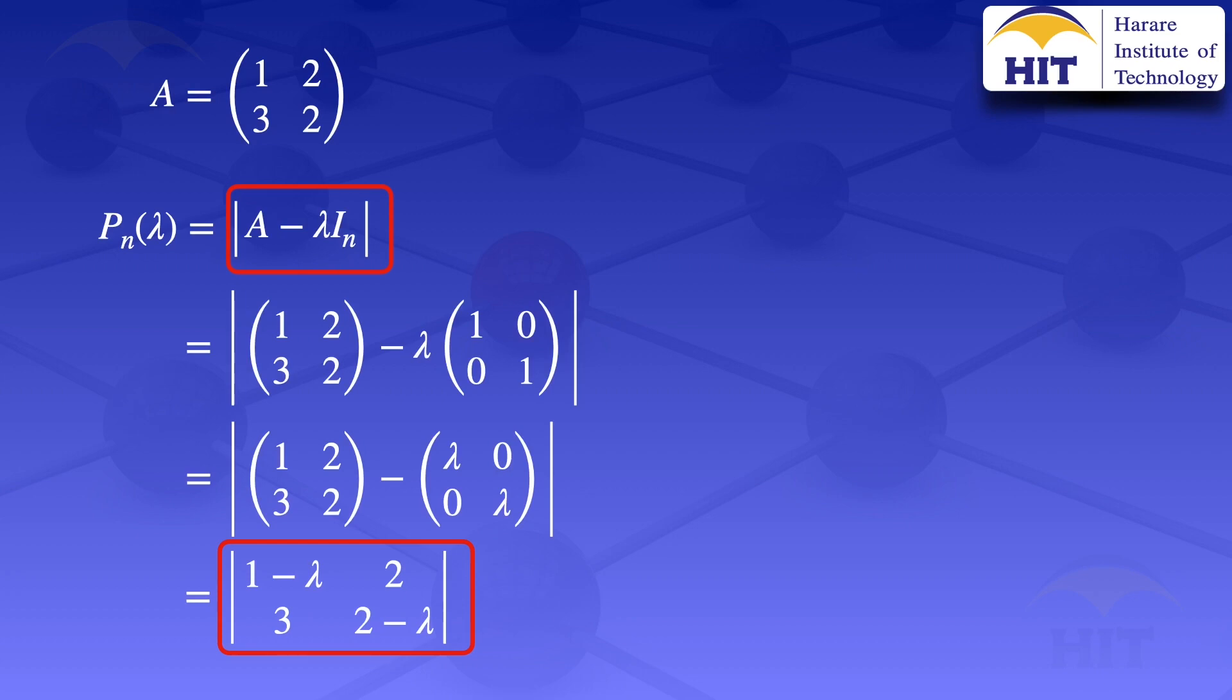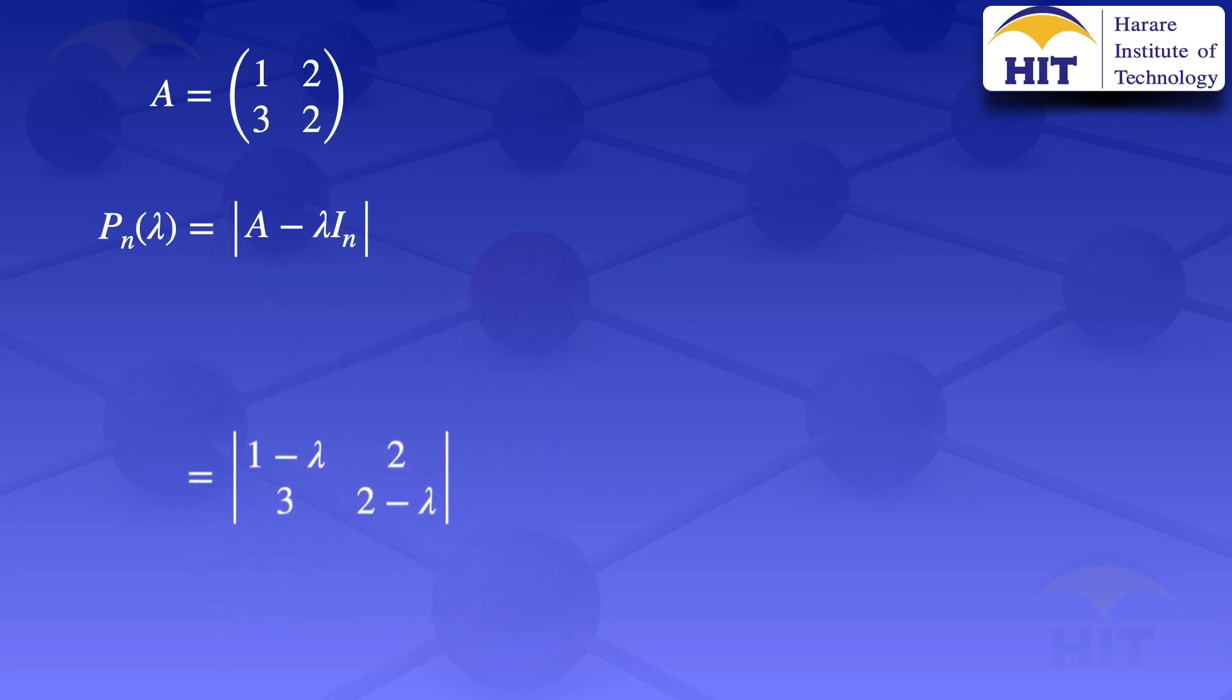So when you are working in the tutorials or the tests or the examination, you can jump from the first step there, which is highlighted, up to the last step that I've highlighted there. The other two steps are not that necessary. I was just illustrating it for the first time so that you would see clearly what is happening. So what we have here is that the characteristic polynomial is the determinant of 1 minus lambda, 2, 3, 2 minus lambda.